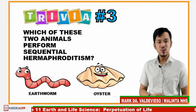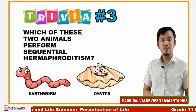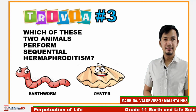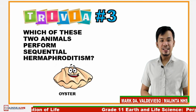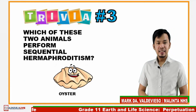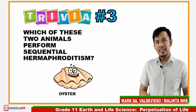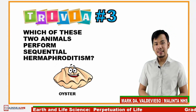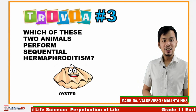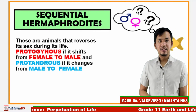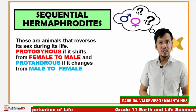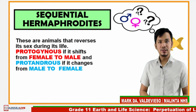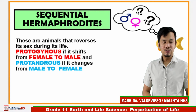Lastly, which of these two animals performs sequential hermaphroditism? The answer is the oyster. Sequential hermaphrodites are animals that reverse their sex during their lifetime. It is called protogynous if it shifts from female to male, and protandrous if it changes from male to female.